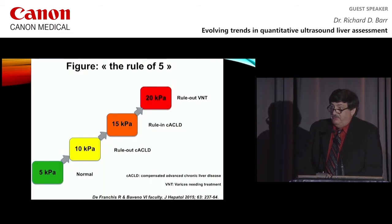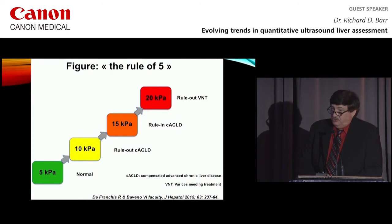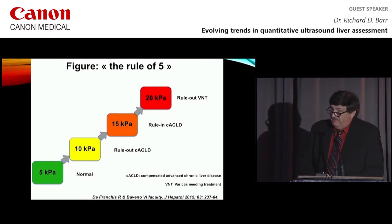The latest WUFM guidelines published at the end of 2018 modified that, using the rule of five. Five kilopascals or less is normal. Between 5 and 10, you can rule out compensated advanced chronic liver disease. Between 10 and 15, you have to be concerned about cACLD. Above 15 kilopascals, you rule in cACLD. And above 20 kilopascals, you can rule out varices needing treatment.